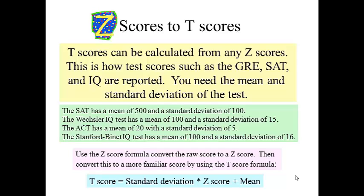If you know the standard deviation and the mean of a norm reference test, you can draw the bell-shaped curve. For example, the SAT has a mean of 500 and a standard deviation of 100. So putting 500 in the center and then 400 and 600 on either side of it, you begin to construct your bell-shaped curve.